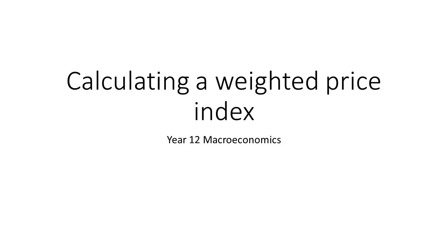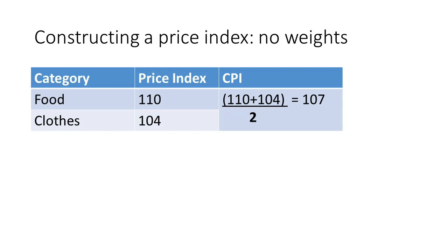Let's first take a situation in which there are no weights, assuming that households are spending their money on just two categories: food and clothes. Food is given a price index of 110 and clothes a price index of 104. Taking a simple non-weighted price index, we take a simple average: 110 plus 104 divided by 2 gives us a non-weighted price index of 107.